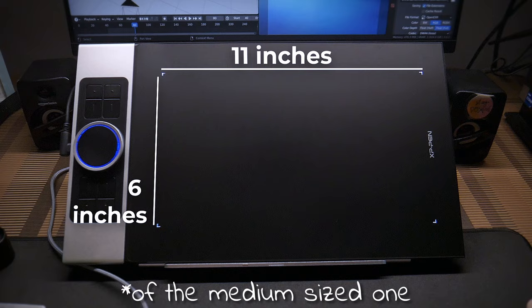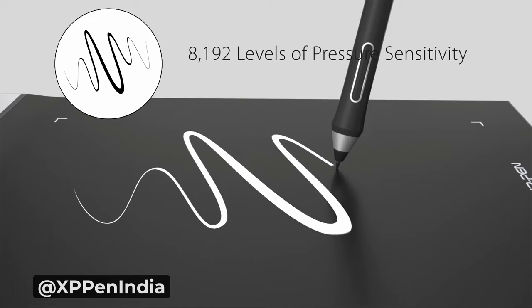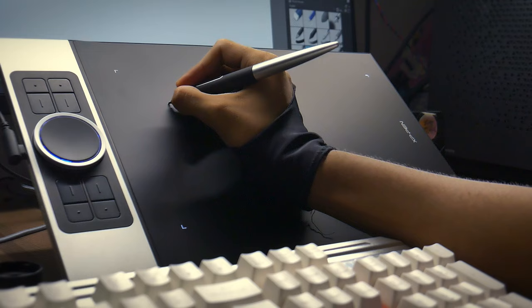The pressure level of the pen is 8192 levels. The more the pressure level the better. It supports 60 degrees of tilt and the pen is battery free. So you don't even need to charge it and it works without even connecting to a wire.